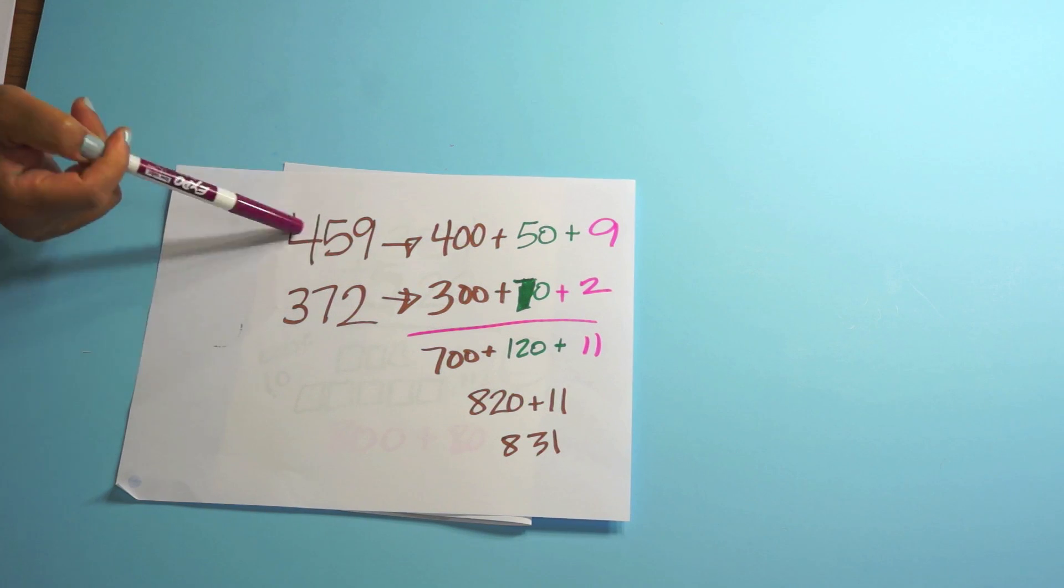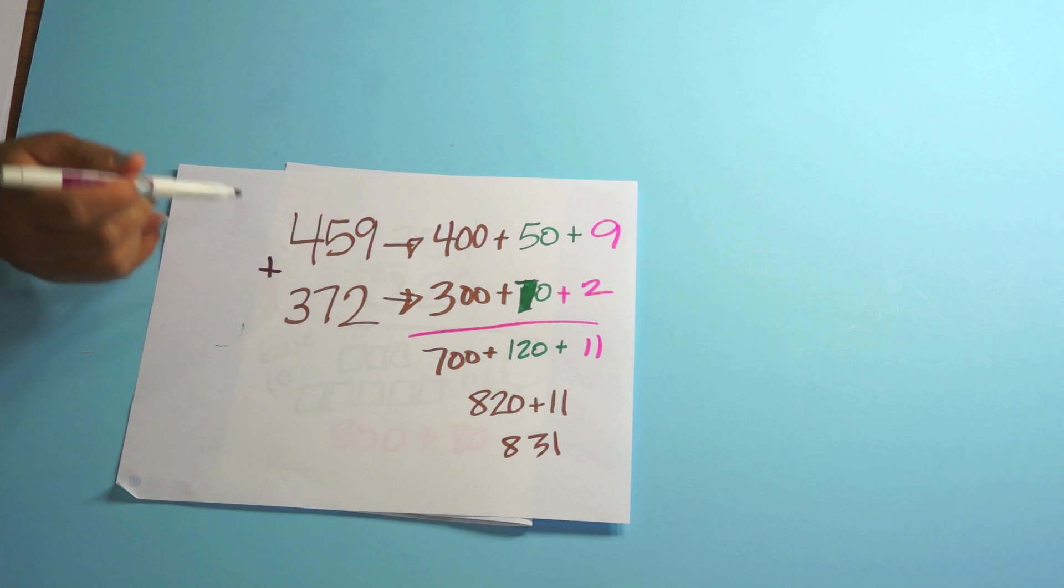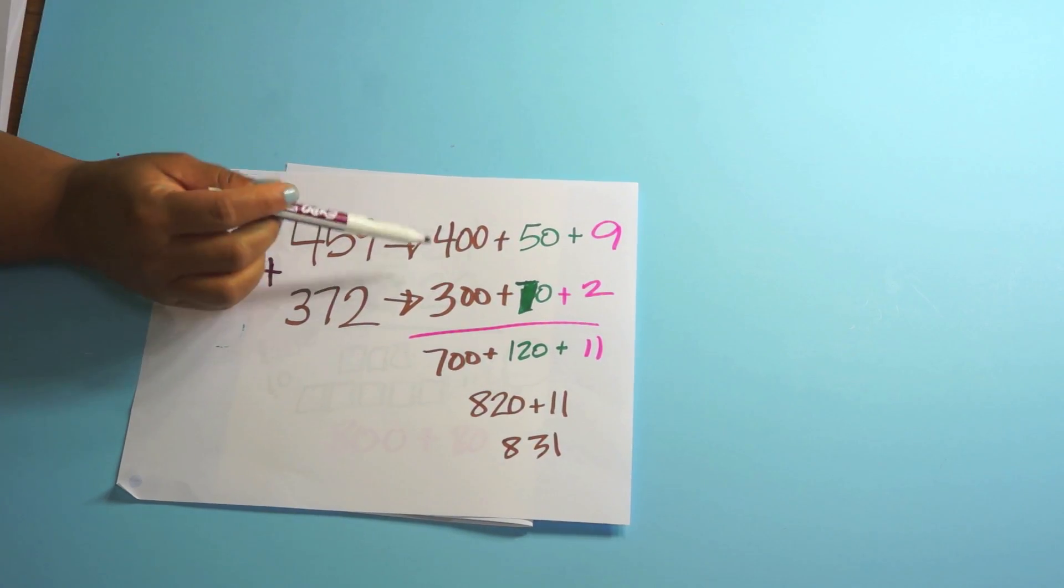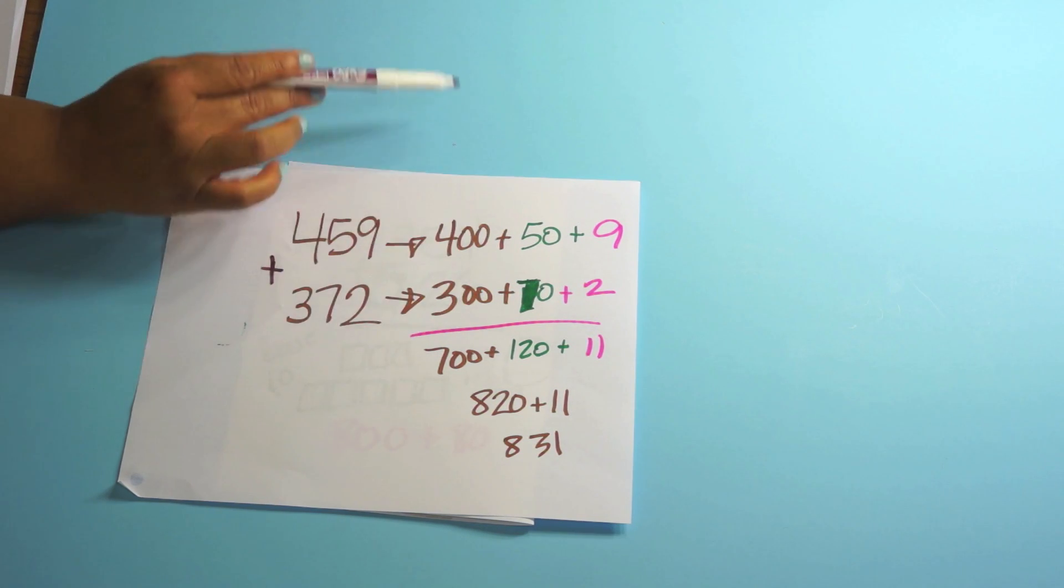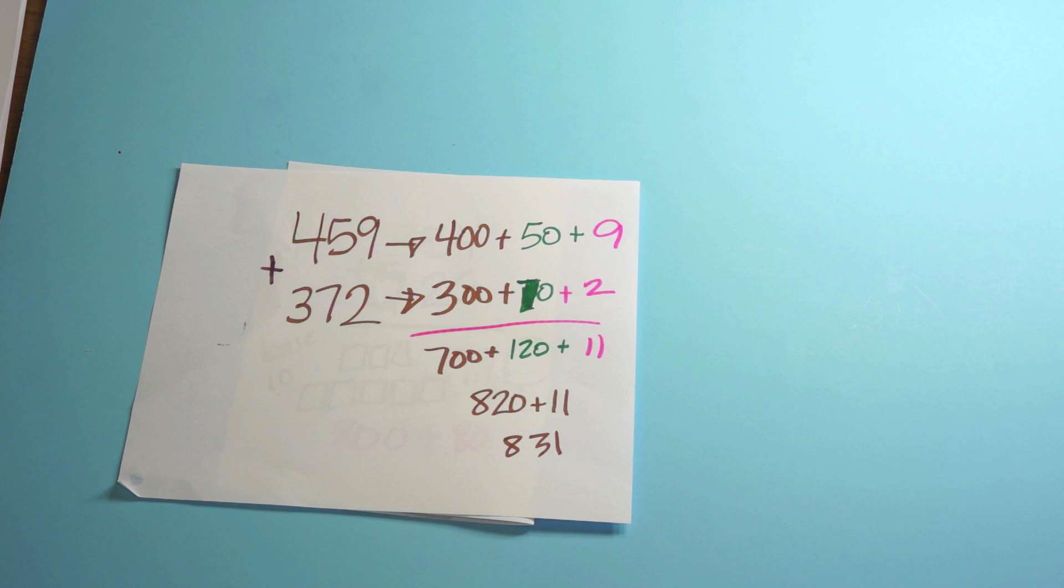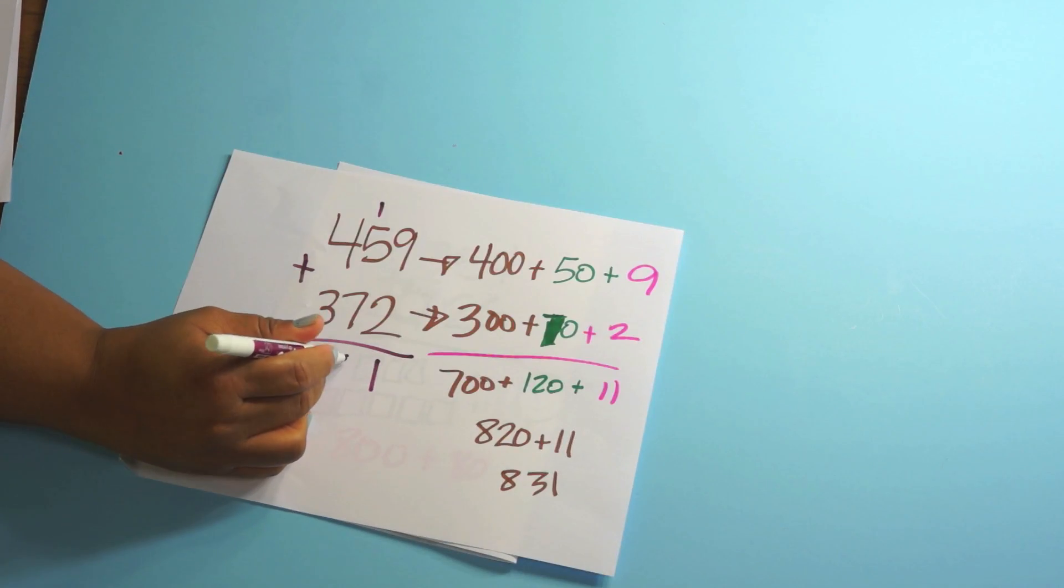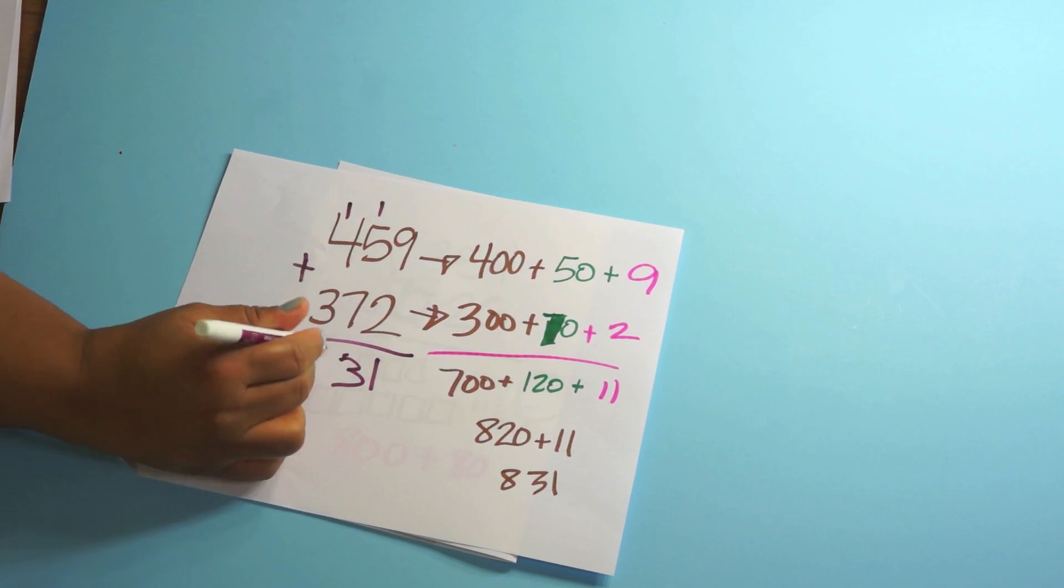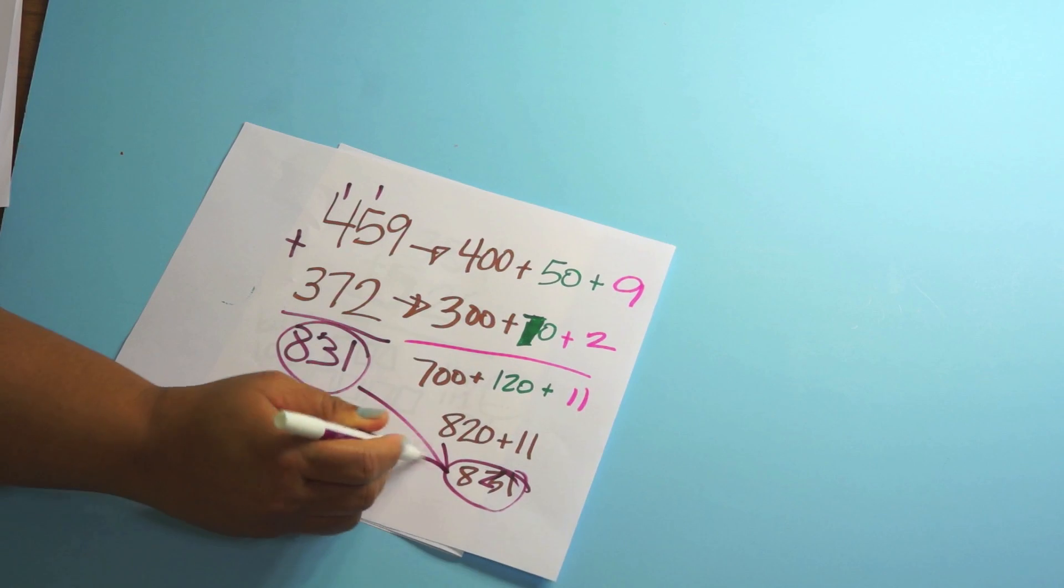Here's another strategy that kids should know. Partial sums. So 459 plus 372. What you're going to have the kids do is break it apart. 400 plus 50 plus 9. I like using the different colors. So then you have 700 plus 120 plus 11. You get 820 plus 11 equals 831.